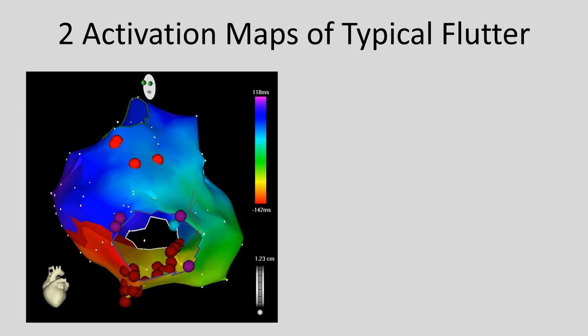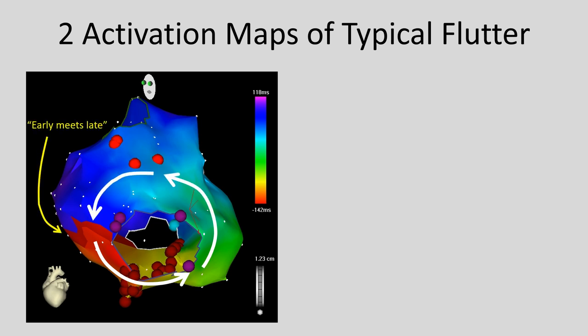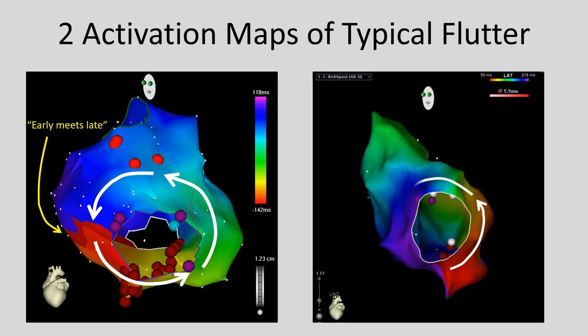Here we have two examples of counterclockwise right atrial flutter. On the left, the circuit travels around and the early-meets-late boundary appears at the 9 o'clock location at the tricuspid annulus — which is of course not where we make the ablation line, which is down on the cavotricuspid isthmus on the floor of the right atrium. In the other example, again you have a counterclockwise circuit, but the early-meets-late is at 6 o'clock on the tricuspid annulus. So let's review why we have the same circuit in these two patients but different color schemes.